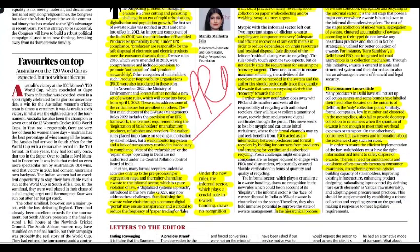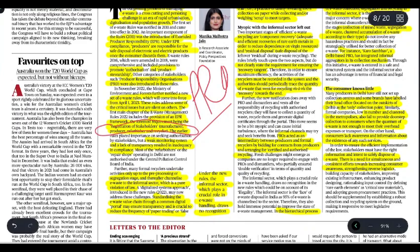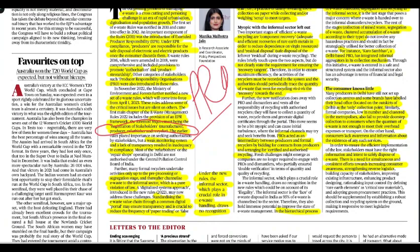Earlier provisions had a weak monitoring system and lacked transparency. Refurbishers and repair shops in Delhi are not authorized under the CPCB — the Central Pollution Control Board of India. Many formal recyclers conduct activities like pre-processing and segregation, then channel e-waste to the informal sector, which is a pure violation of law. The digitalized system approach in the new 2022 rules has addressed this challenge by creating a standardized e-waste value chain through a common digital portal to ensure transparency and reduce fraudulent paper trading.